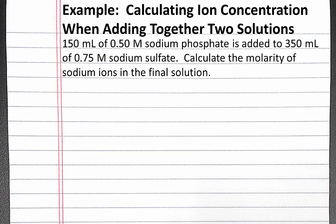In this example problem, we'll calculate an ion concentration when adding together two aqueous solutions. Our problem reads: 150 milliliters of 0.5 molar sodium phosphate is added to 350 milliliters of 0.75 molar sodium sulfate.